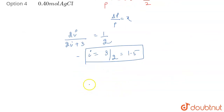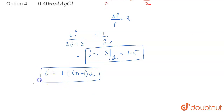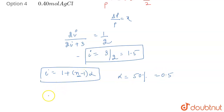Now we have the Van't Hoff factor. Using the formula i = 1 + (n − 1)α, and the degree of dissociation α is given as 50%, which is 0.5. Substituting: 1.5 = 1 + (n − 1) × 0.5.